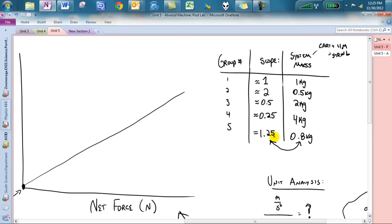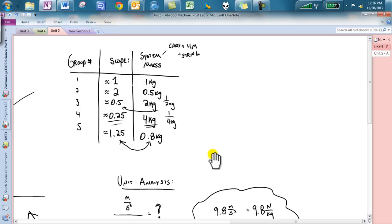Alright, so the pattern that we're seeing here is whatever number I have here, if I take one over that number, one over four kilograms, you realize that I get my slope value. If I had two kilograms, one over two kilograms, I get 0.5. So you realize, if I take one over the system mass, I get my slope. So that is what the slope is representing.